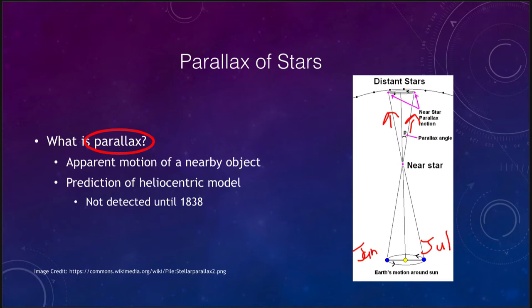This was predicted but was not actually detected until 1838. In 1838 we measured the first parallax of a star and were really able to see that the Earth must be moving, because that was one of the predictions that the heliocentric model made.